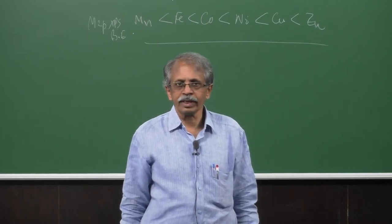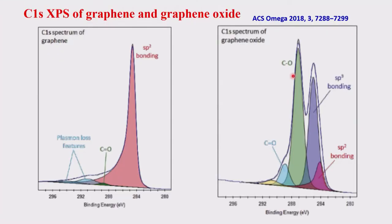Having looked at inorganic compounds, we can now look at composites. Let us draw attention to this particular slide — the XPS of carbon or graphene oxide. The C1S XPS of graphene: pure graphene means there should be no oxide, but you will never get that. You will always see a little carbonyl carbon and other things, but primarily SP2 carbon is what you would see.